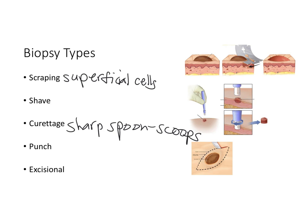An excisional biopsy is where there are margins around the lesion and we're trying to remove the entire lesion. We want to get clear margins to make sure no cancerous tissue is left behind, but not so much that we're losing healthy tissue. We also want to think about wound healing and the edges being approximated.